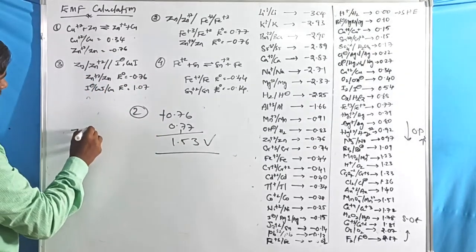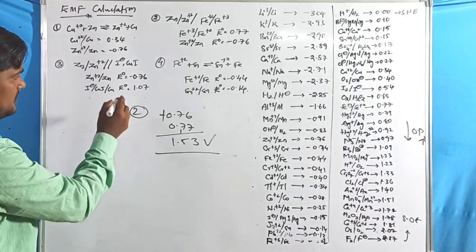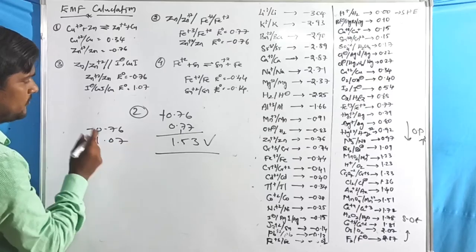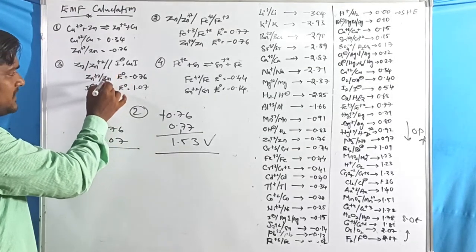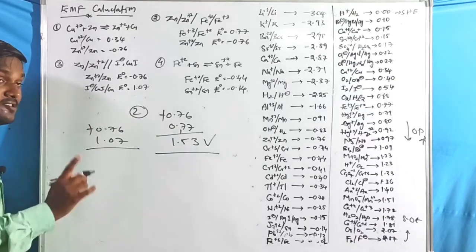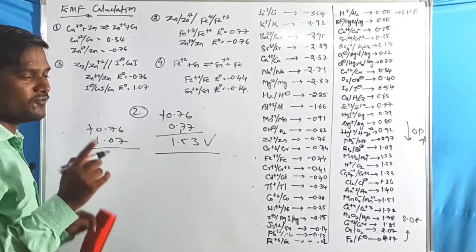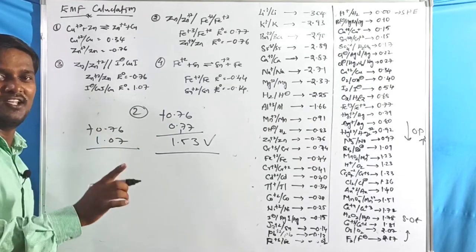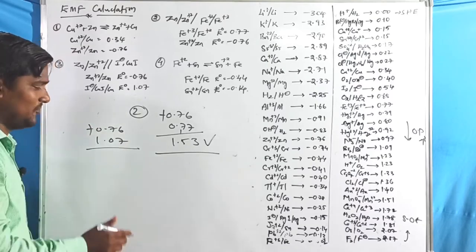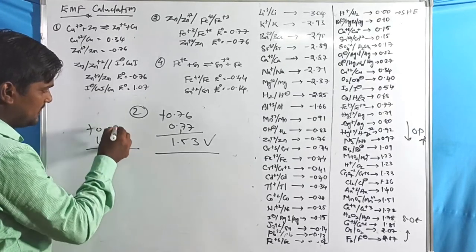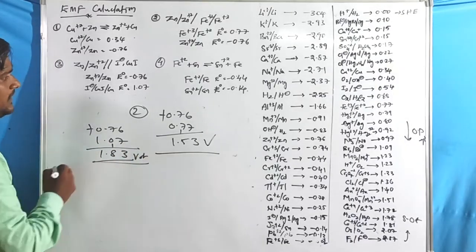Problem 3: zinc and another electrode with a value of 1.07. Zinc undergoes oxidation but the reduction potential is given, so we change the sign of the top electrode. Arrange the series, change the sign of the anodic value, and add them: the result is 1.83 volts.